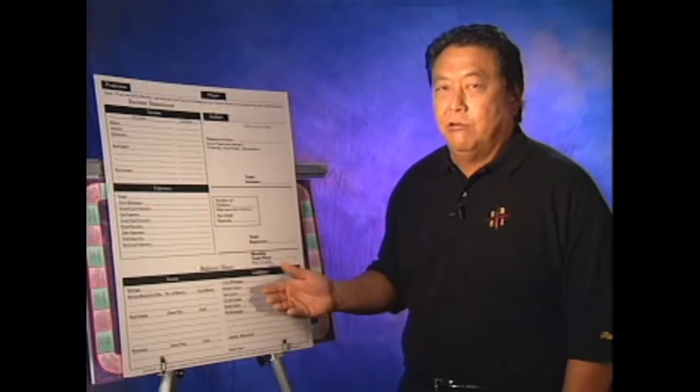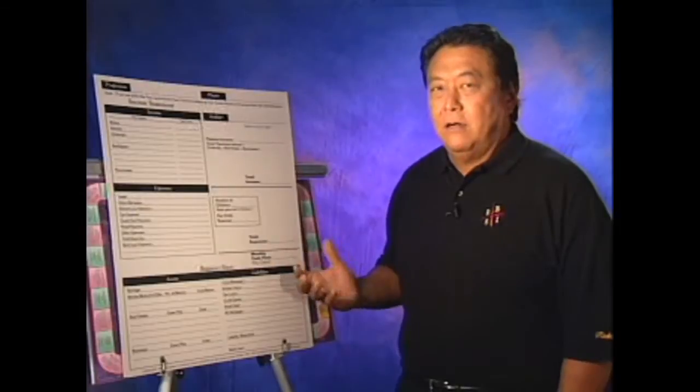When your banker says to you your house is an asset, your banker's not really lying to you. He's just not saying whose asset it is. Your house is really your bank's asset. That's why the doodad card is so important.